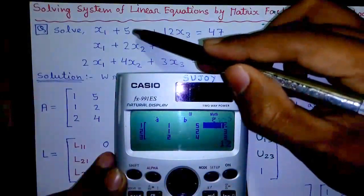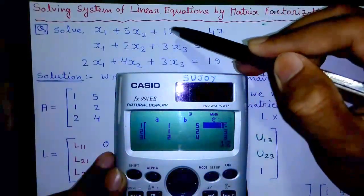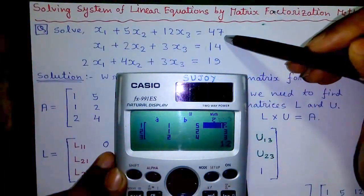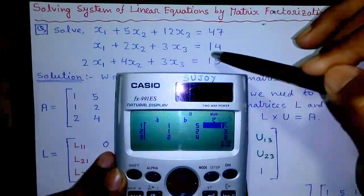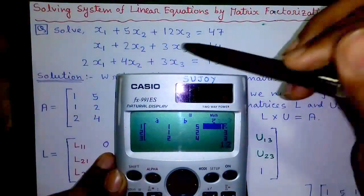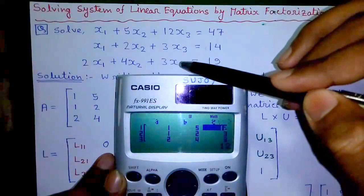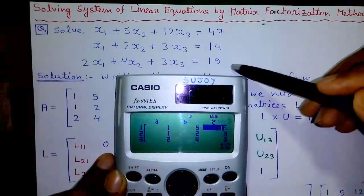So here is our question: x1 plus 5x2 plus 12x3 equals to 47, x1 plus 2x2 plus 3x3 equals to 14, 2x1 plus 4x2 plus 3x3 equals to 19.